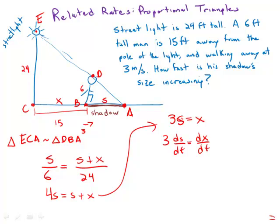Well, dX/dt, how fast the man is getting far away from the light, we know dX/dt. That was given in the problem. That's 3.